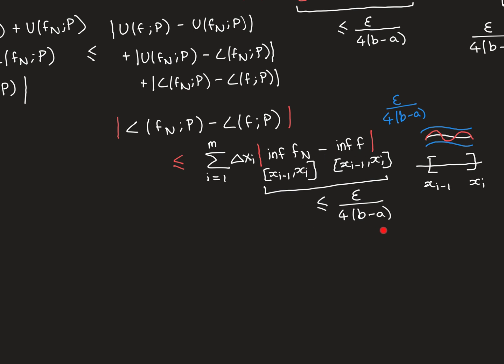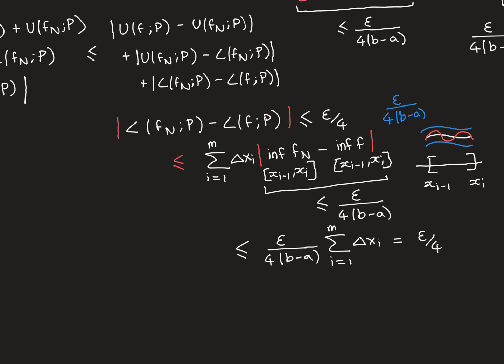I think that's one of the trickiest parts of understanding this proof: understanding why the inequality for infimums (and equivalently for supremums) is less than or equal to, rather than strictly less than. Continuing on: since we know each modulus of the difference of infimums is less than or equal to ε over 4(b − a), the entire sum is less than or equal to ε over 4(b − a) times the sum from i = 1 to m of δx_i. Again, summing all subinterval lengths gives b − a, which cancels with the b − a in the denominator, so we again get ε over 4. We can therefore conclude that the modulus of the difference of the lower sums is less than or equal to ε over 4.